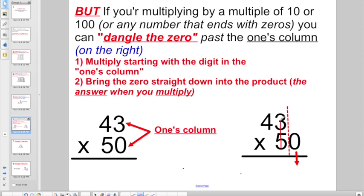We can start off going 5 times 3. 5 times 3 is 15. So I'm going to write down my 5. I want to carry my 1. Then I'm going to go 5 times 4 is 20. Add the 1 more for 21. But I'm not done yet because I set this up as a dangle the zero. So now I bring my zero straight down. And I end up with 2,150.